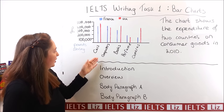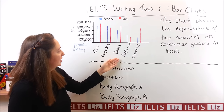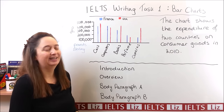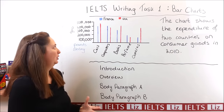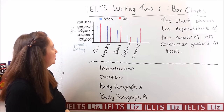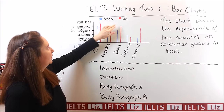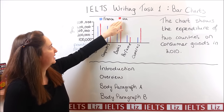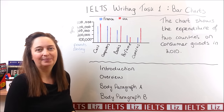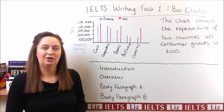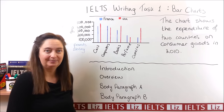We have cars, computers, books, perfume, and cameras. And if we look further, we can see that the two countries — we've got one in blue and one in red — we've got France and the UK. So that is our bar chart for this lesson. Let's have a look at our paragraphs.